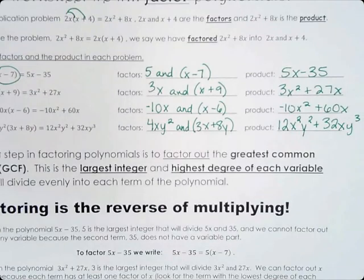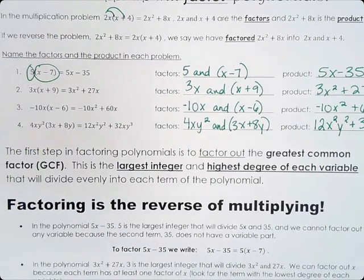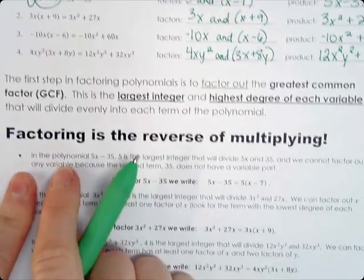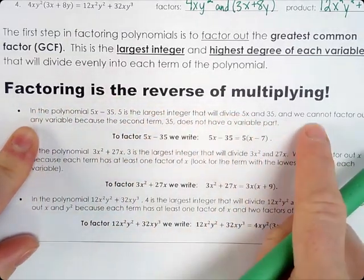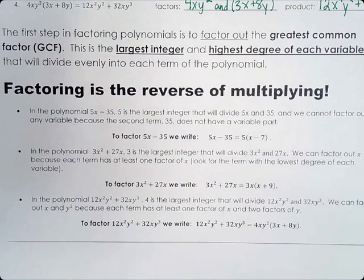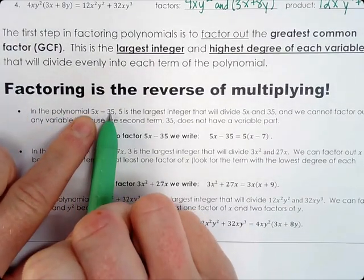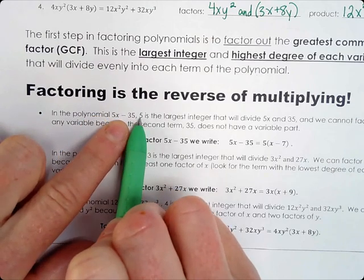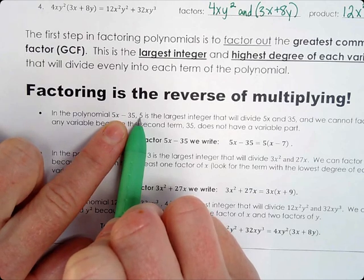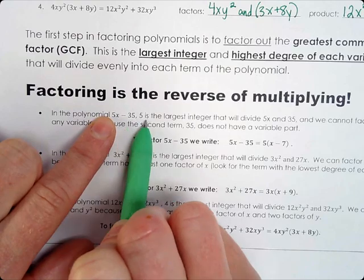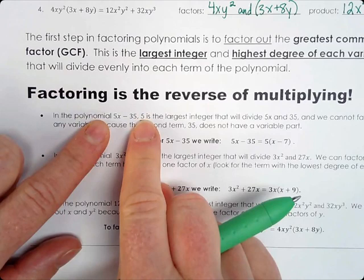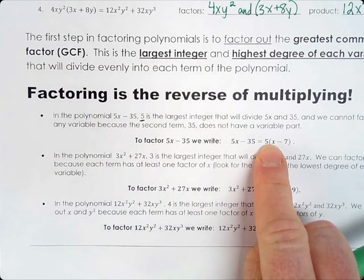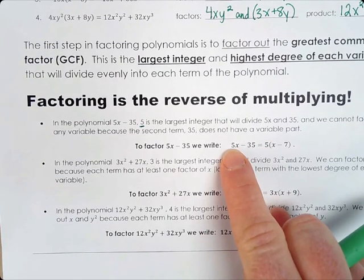Now that we know what factors and products are, we're going to look at how to factor out the greatest common factor. The GCF is the largest integer factor and highest degree of each variable that will divide evenly into each term of the polynomial. Factoring is the reverse of multiplying — we can divide in order to factor. For 5x minus 35, the factors of 5x are 5, 1, and x. The factors of 35 are 5 and 7, so the greatest common factor is 5. We factor the 5 out outside the parentheses, and 5 times what gives 5x? That would be x.